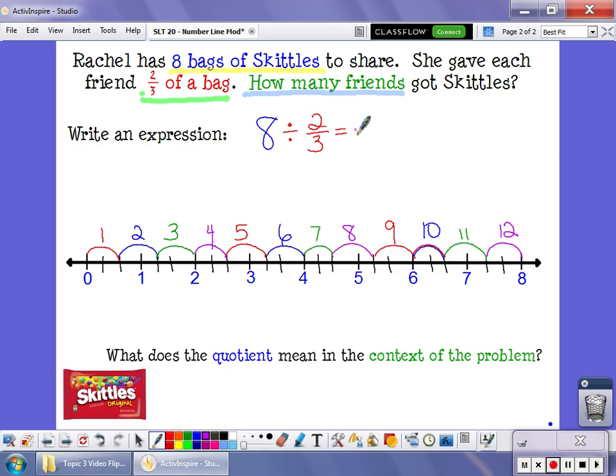So eight divided by two-thirds is twelve. There are twelve groups of two-thirds inside eight. Which means, and the answer to this question is, twelve friends will get Skittles.